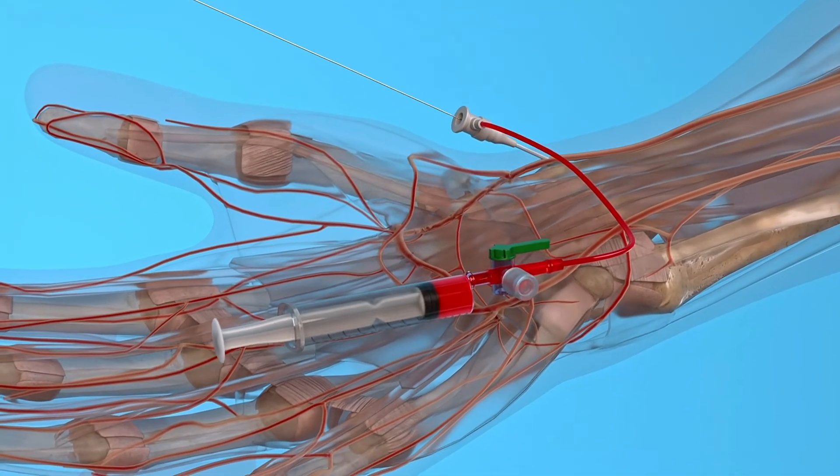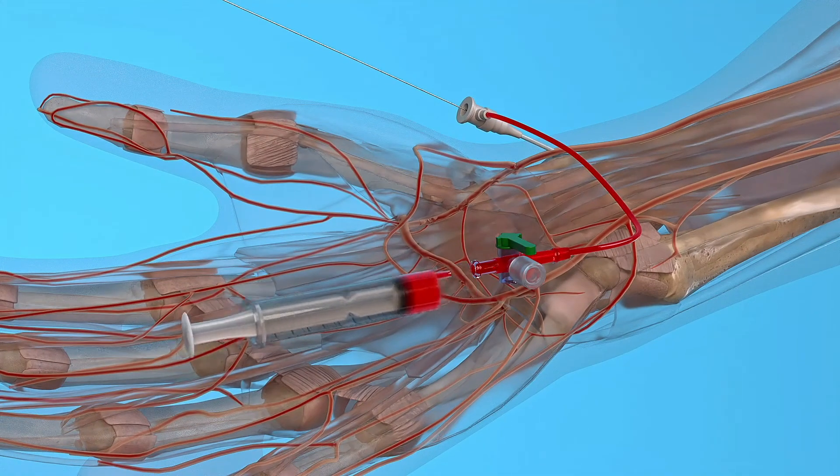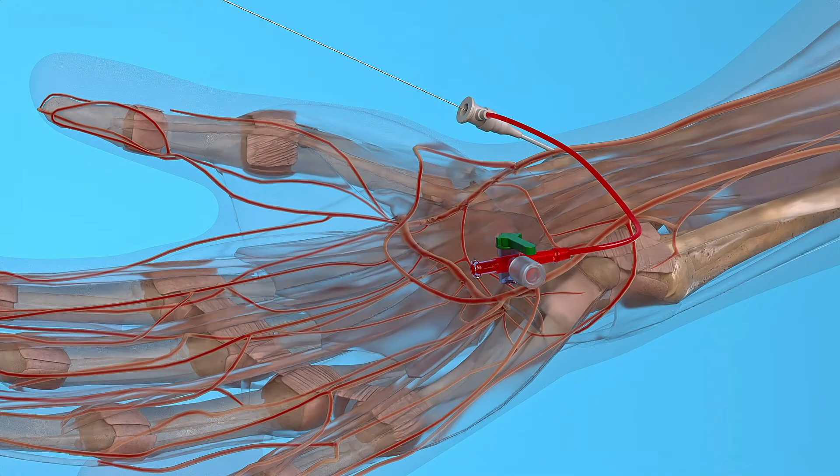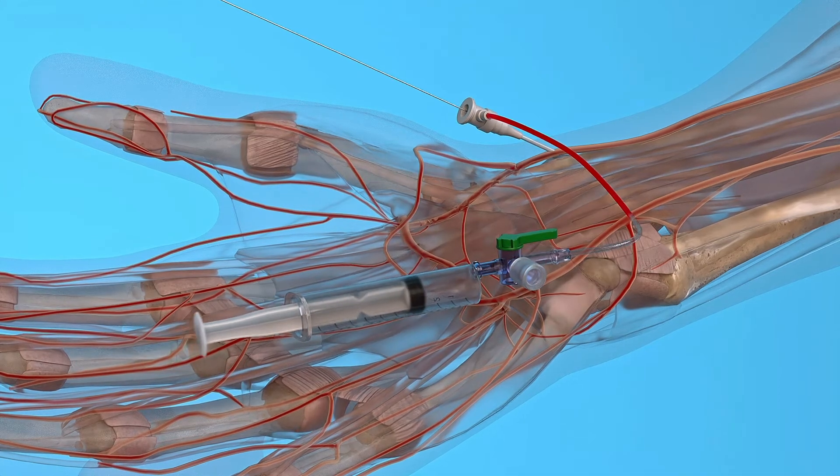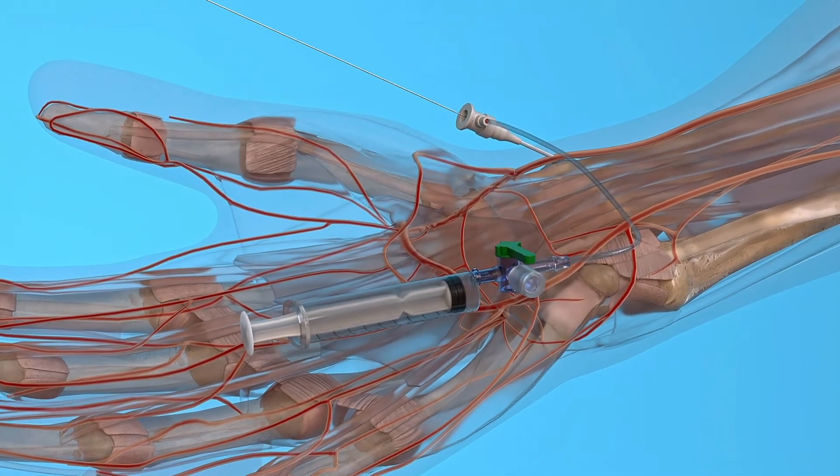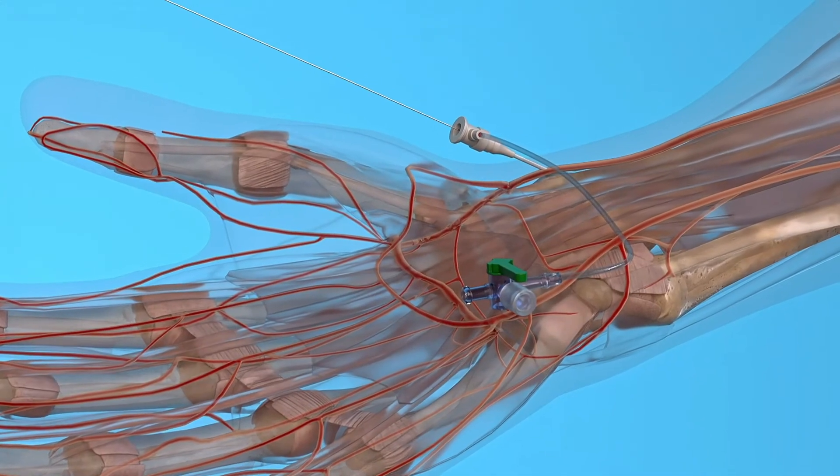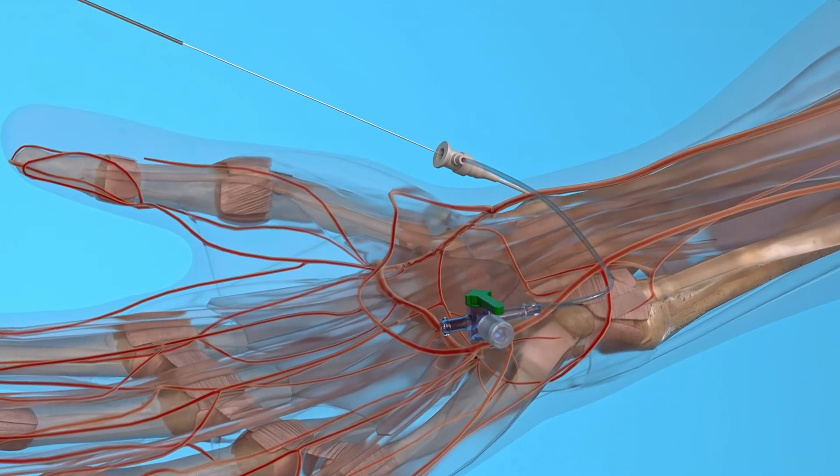After checking the patency of the introducer, it is flushed. Then a catheter is inserted.